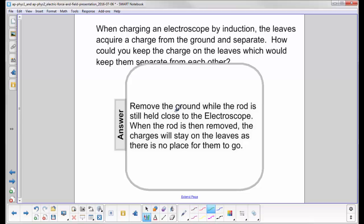You have to remove the ground while the rod is still close to the electroscope. When the rod is then removed, the charges will stay on the leaves.